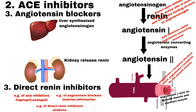Angiotensinogen, which is synthesized in the liver, is the main substrate for renin. Renin acts on angiotensinogen and forms angiotensin-1. Angiotensin converting enzyme then converts angiotensin-1 to its physiologically active form, angiotensin-2. Angiotensin-2 causes contraction of the muscle surrounding the blood vessel, effectively narrowing blood vessels and increasing blood pressure. It also stimulates the release of aldosterone, which stimulates water and sodium reabsorption, thereby increasing blood volume and blood pressure.